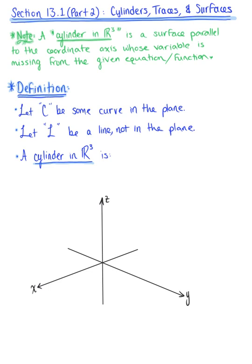I want you to note that in space or in three dimensions, the word cylinder takes on a more general meaning than what we know from R2. We say that a cylinder in three dimensions is a surface parallel to the coordinate axis whose variable is missing from the given equation or function.